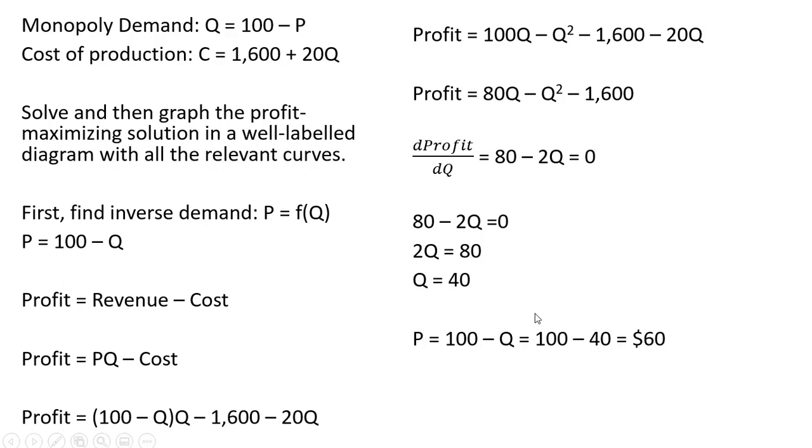And let's check the firm's profit at this profit maximizing outcome. One way we can do that is we can take this Q = 40 and plug it into this profit equation. So where we have Q, we're going to replace that with 40. And we see that this firm is indeed making zero economic profit, just a normal rate of return.